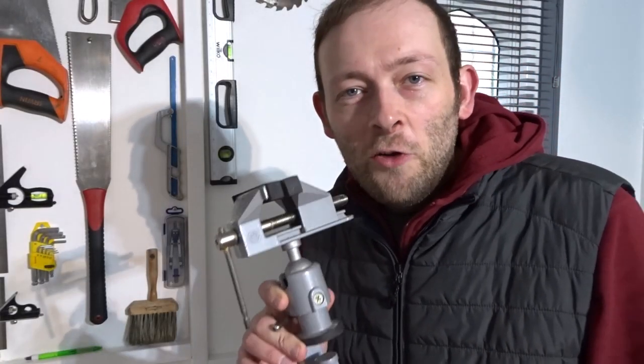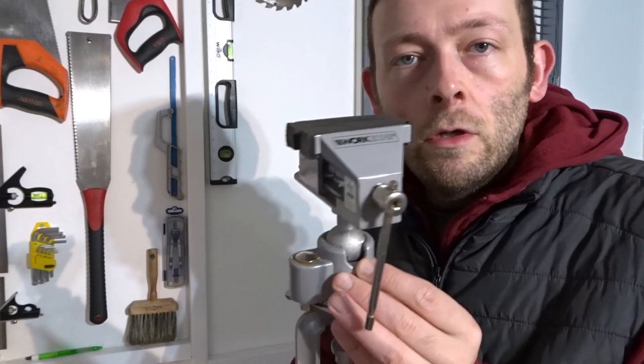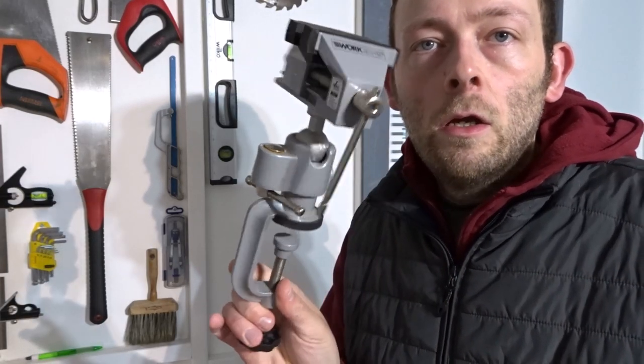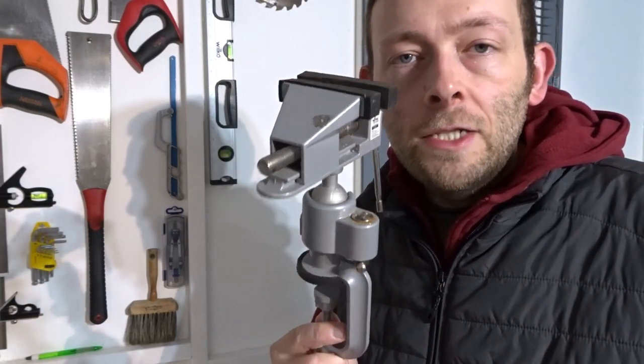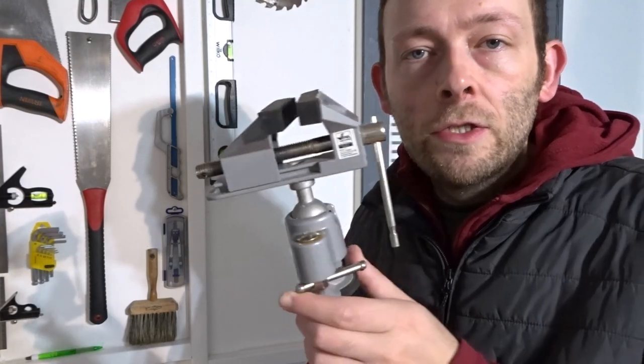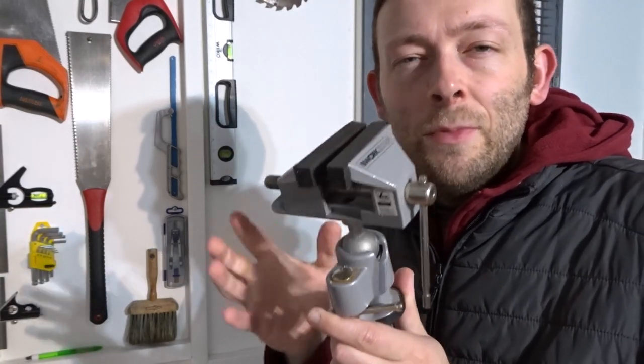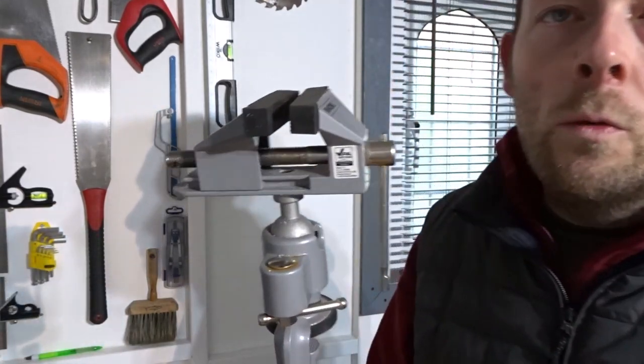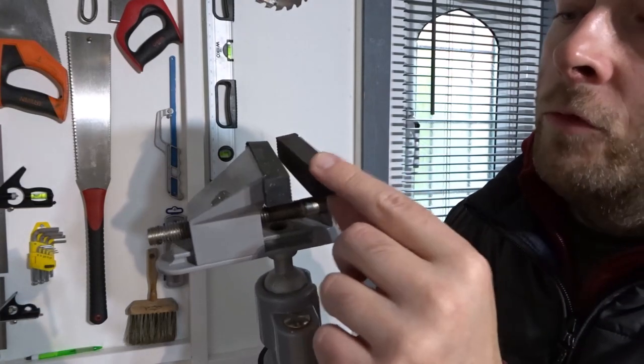So currently I'm using this Workzone smaller kind of hobby vise and that's been fine for certain projects and things but I was looking for something a little bit more heavy duty. So I will be keeping this one. It has rubber jaws.